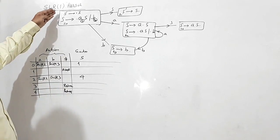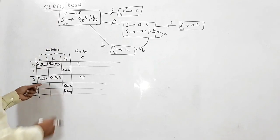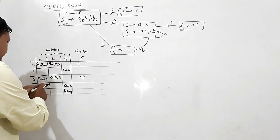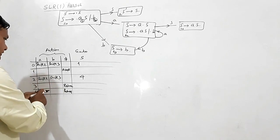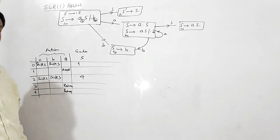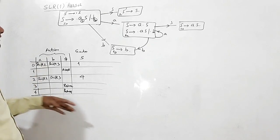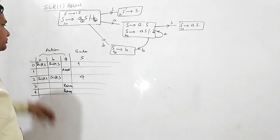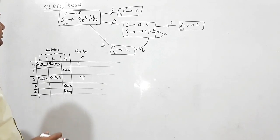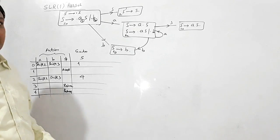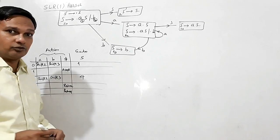FOLLOW of S is dollar, so this reduce 1 will also be written in the dollar column only. If I had to write an LR(0) parsing table, I would have to write reduce 1 and reduce 2 everywhere. So this is the SLR(1) parsing table, and parsing can be done the same way as in LR(0).